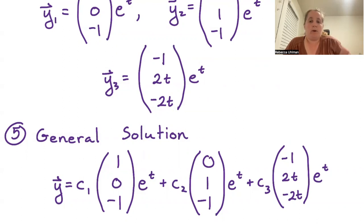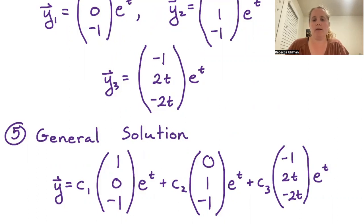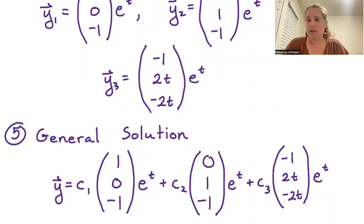This is it for what we will be covering for the repeated eigenvalue cases. We've seen both what you can do with n linearly independent eigenvectors and what to do for cases with low multiplicity and low eigenspace dimension. Some generalization beyond this is possible, but it won't come up until you hit 4 by 4 systems or larger.